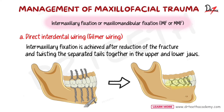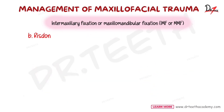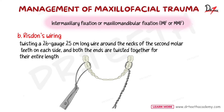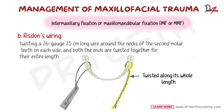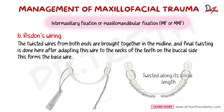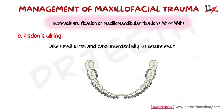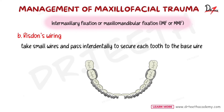Ritson's wiring involves twisting a 26-gauge, 25 cm long wire around the necks of second molar teeth on each side. Both ends are then twisted together for the entire length. The twisted wires from both ends are brought together in the midline from the buccal side to form the base wire. Small wires are then passed interdentally to secure each tooth to the base wire.